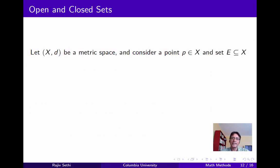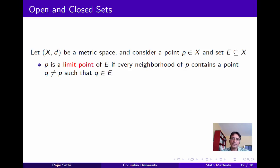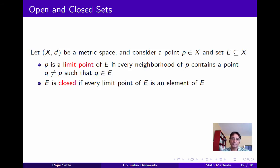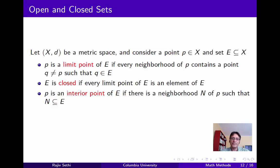Next consider open and closed sets. Consider any metric space xd, any point p in x, and any subset E of x. We say that p is a limit point of E if every neighborhood of p contains a point q other than p such that q is an element of E. Note that p need not be an element of E in order for it to be a limit point of E. We say that E is a closed set if it contains all its limit points. We say that p is an interior point of E if there's a neighborhood of p fully contained in E. And we say that E is open if all its elements are interior points.